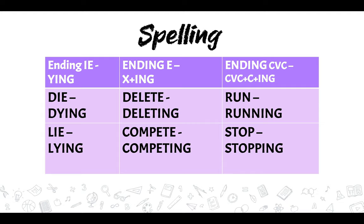Now, spelling of verbs plus -ING. If a verb ends in -ie, take out the -ie and add -ying: die → dying, lie → lying. If it ends in -e, delete the e and add -ing: delete → deleting, compete → competing. If it ends in consonant-vowel-consonant, double the last consonant: run → running, stop → stopping.